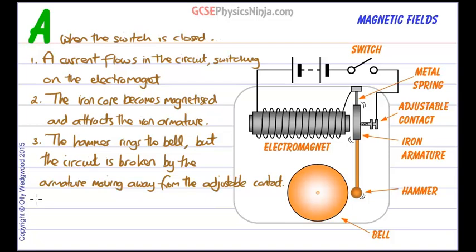Number four, the current in the circuit stops, switching off the electromagnet and demagnetizing the iron core.